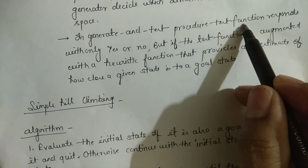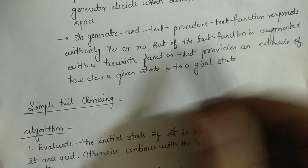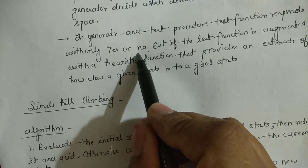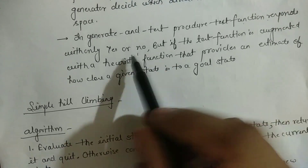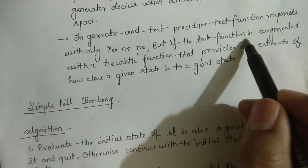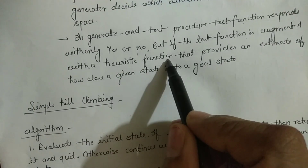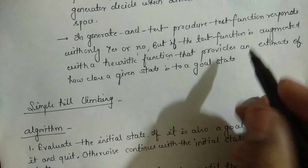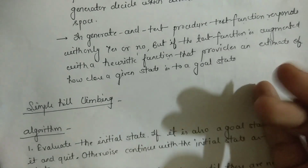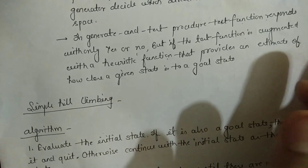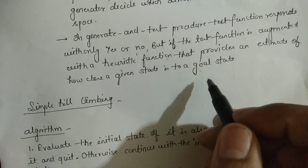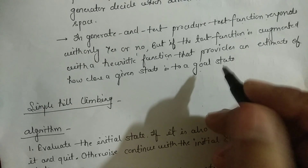In the Generate and Test procedure, the test function responds about the next step. But here the test function will be augmented with a heuristic function, and it will tell you whether the new state is the goal state and which direction we should move — choosing the state closest to the goal as the next step.